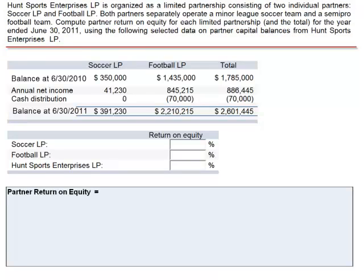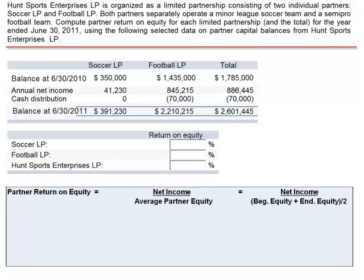To calculate partner return on equity, we take net income and divide by average partner equity: net income divided by beginning equity plus ending equity, divided by 2.